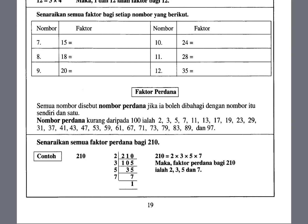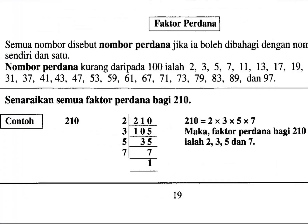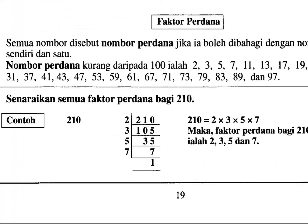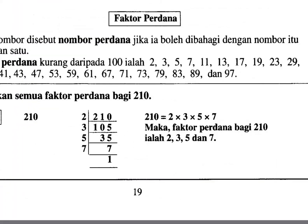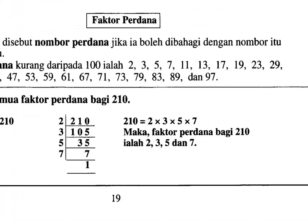For example, nombor perdana — let's start with 2. 2 boleh bagi dengan 2 je lah. 2 boleh bagi 3 tak? 2 boleh bagi 4 tak? 2 boleh bagi 5? Cannot. So we always start with 2 because 2 cannot be divided by any other number.